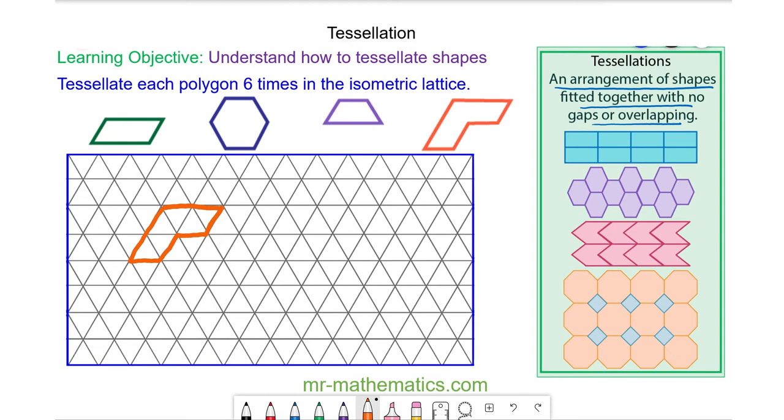So again I'm going to show we can tessellate this hexagon by growing it across the lattice in all directions.